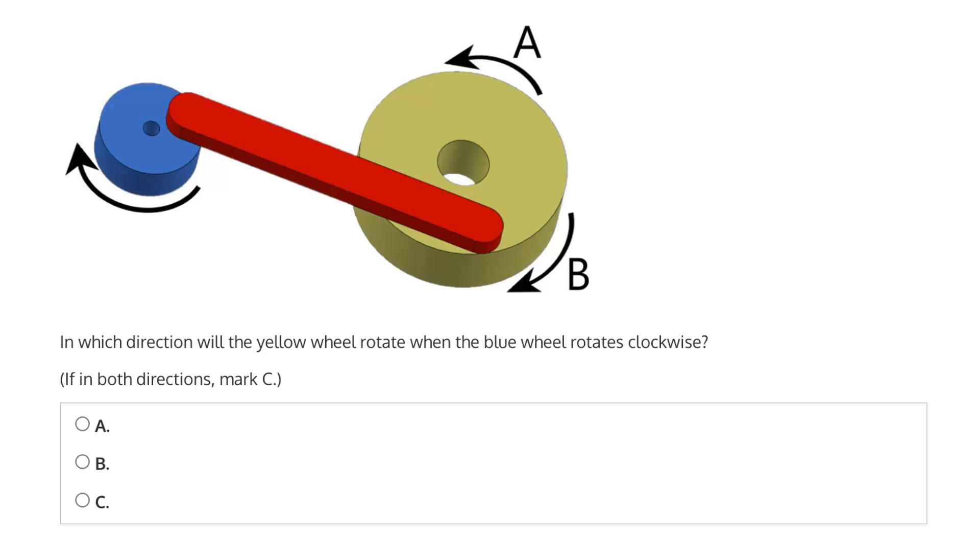This question says, in which direction will the yellow wheel rotate when the blue wheel rotates clockwise? Will it be A, counterclockwise, B, clockwise, or if in both directions, then mark C?